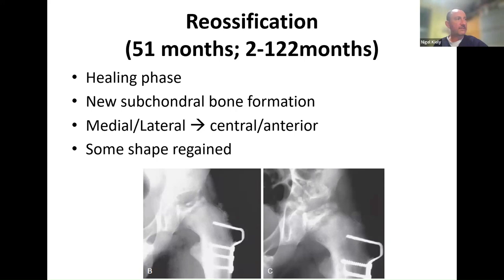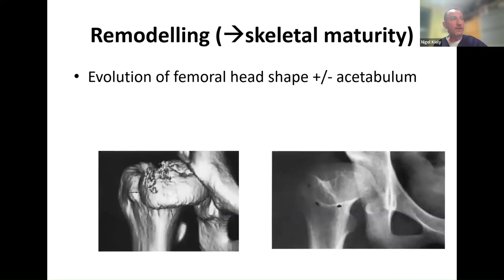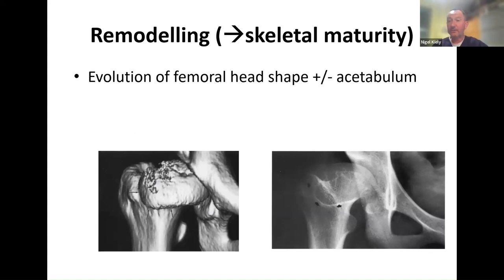Reossification starts from the inside to the outside, and some of the shape is regained. Then we have the remodeling phase, which goes all the way through growth — girls finish growing around age 14, boys around 16. This is when the hip is regrowing and developing its final shape. A CT scan can show a hip that has developed more of a mushroom shape rather than a nice round shape.